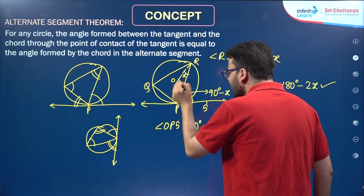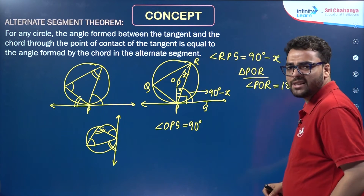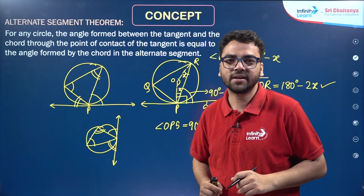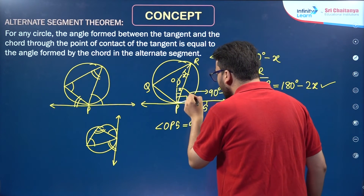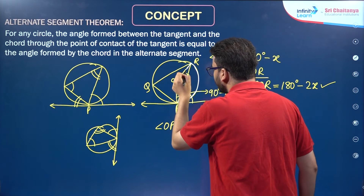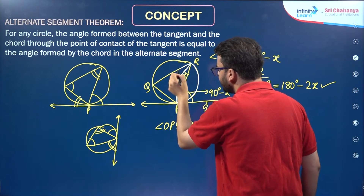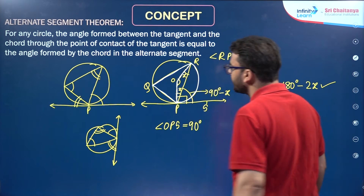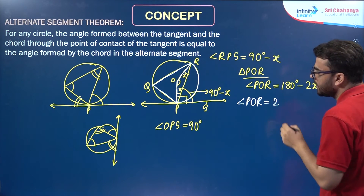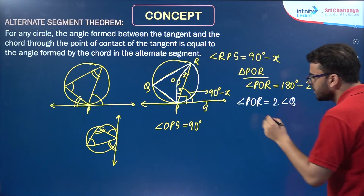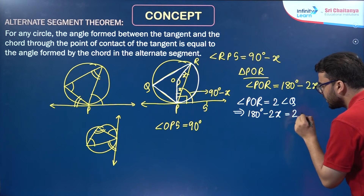Now, we have studied the property that the angle subtended by an arc of a circle at the center is twice the angle subtended by it at any point on the remaining part of the circle. So if you see arc PR, it makes angle POR at the center, and the same arc makes angle PQR at a point on the remaining part of the circle. So angle POR equals 2 times angle PQR. Since angle POR is 180 minus 2X, that equals 2 times angle Q.